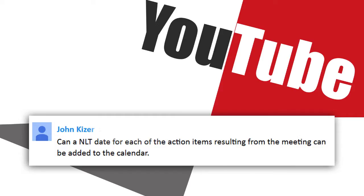In today's video, I'm going to show you how to add a no later than date to action items in your Evernote. Hi, I'm Evan Carmichael, I believe in entrepreneurs. Welcome to another Technology Tuesday video. Today I'm answering a question for one of my YouTube subscribers — John, who wrote in to say: can a no later than date for each of the action items resulting from the meeting be added to the calendar? This is a great question and the answer is kind of, and I'm going to hop over to my Evernote computer to show you how to do it.